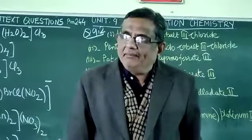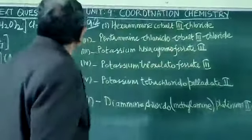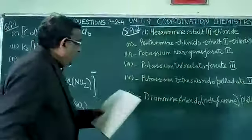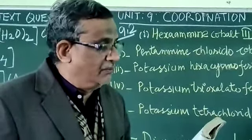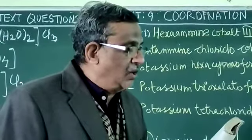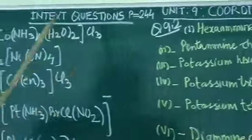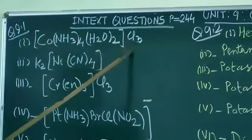Let us do a very important NCERT question on page number 244, which says, write the formula for the following coordination compound. First one is tetramine-diacqua-bobide-3-chloride.